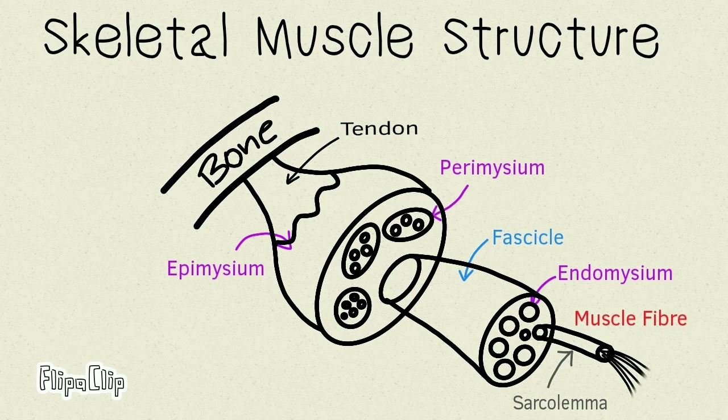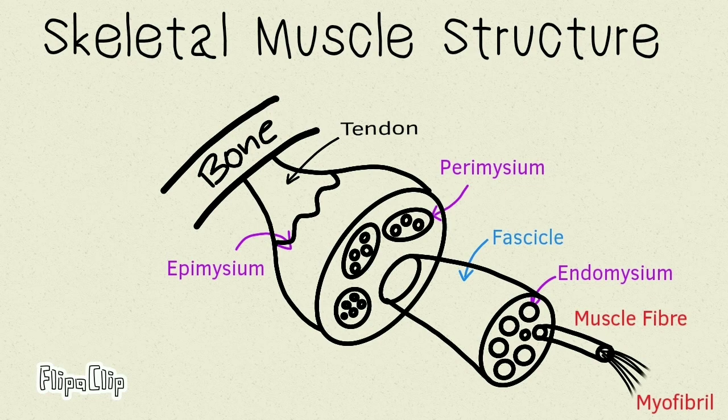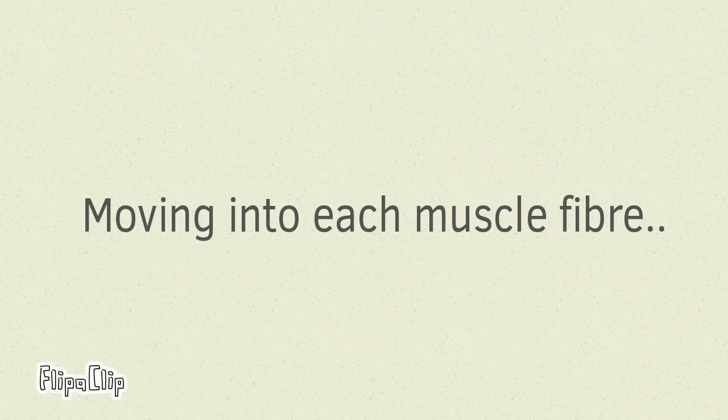The sarcolemma is just the plasma membrane for the muscle cell. Each muscle fiber in turn has several myofibrils present inside it. These are arranged in specific patterns which eventually give the striated pattern to the muscle under a microscope. And this entire arrangement of layers and sleeves on structures forms a muscle. Moving into an individual muscle fiber, we will find a very characteristic arrangement of cells.